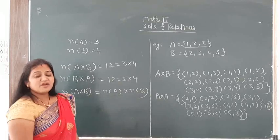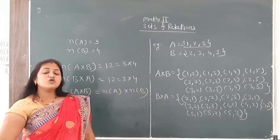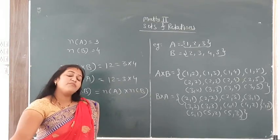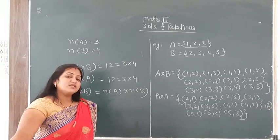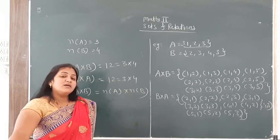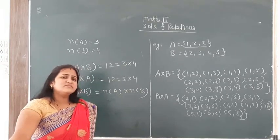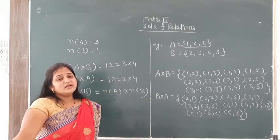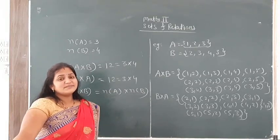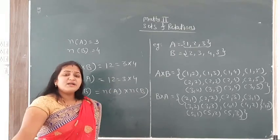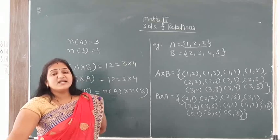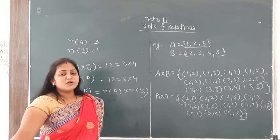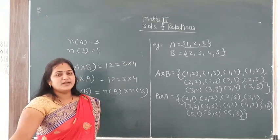For example, suppose n(A) contains 10 elements and n(B) contains 20 elements. What is the number of elements in A cross B? Simply 10 multiplied by 20 equals 200. So the Cartesian product A cross B has 200 elements. I hope you understand all the remarks.